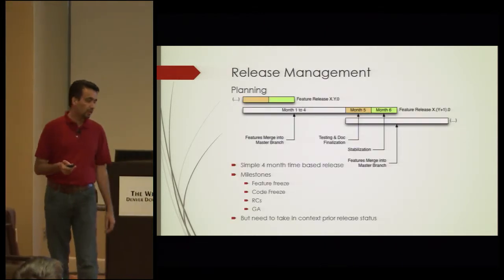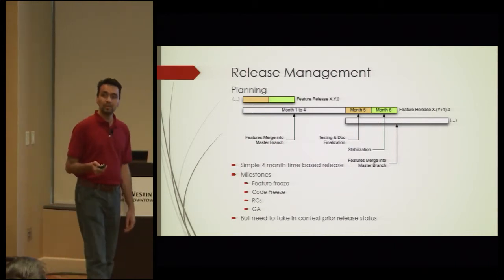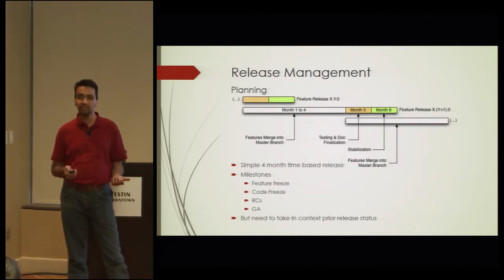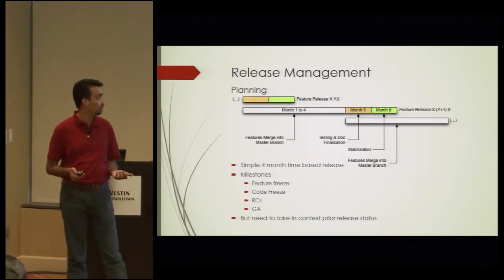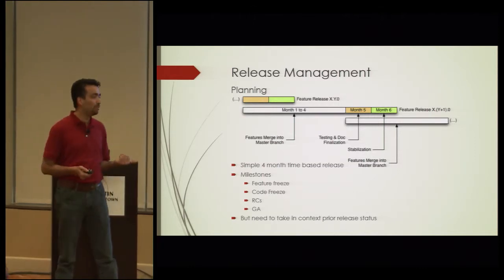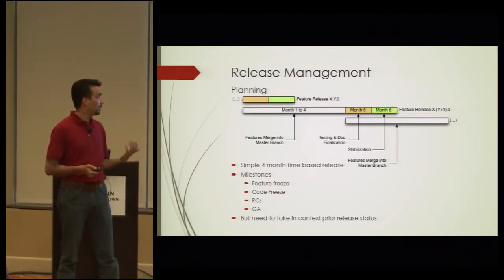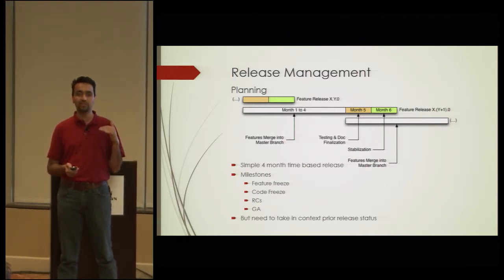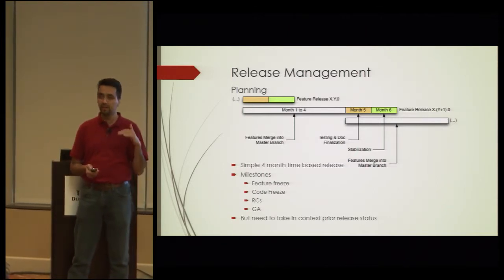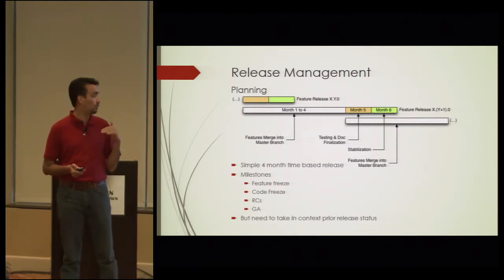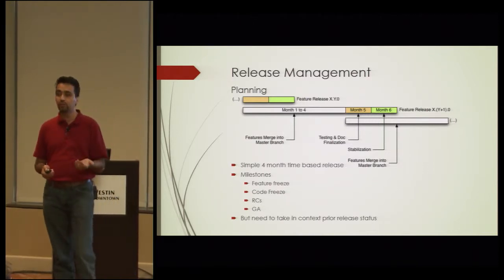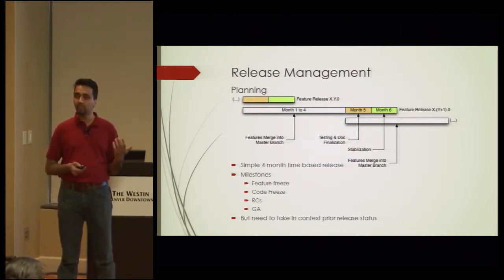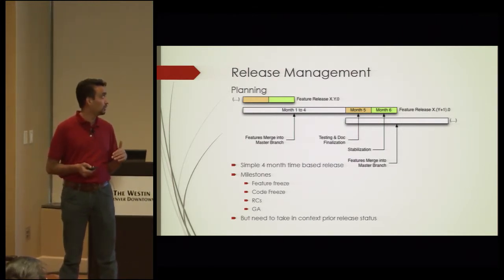Any release management begins with planning. If you think about planning for Apache CloudStack releases, it's relatively very simple, because we have a four-month time-based release cycle. So it becomes very simple to plan — you can pretty much come up with your feature freeze, code freeze, RCs, and GA date based on that four-month time scale. But you also have to take into context where the previous release was, and that's where we sometimes have adjustments to make.